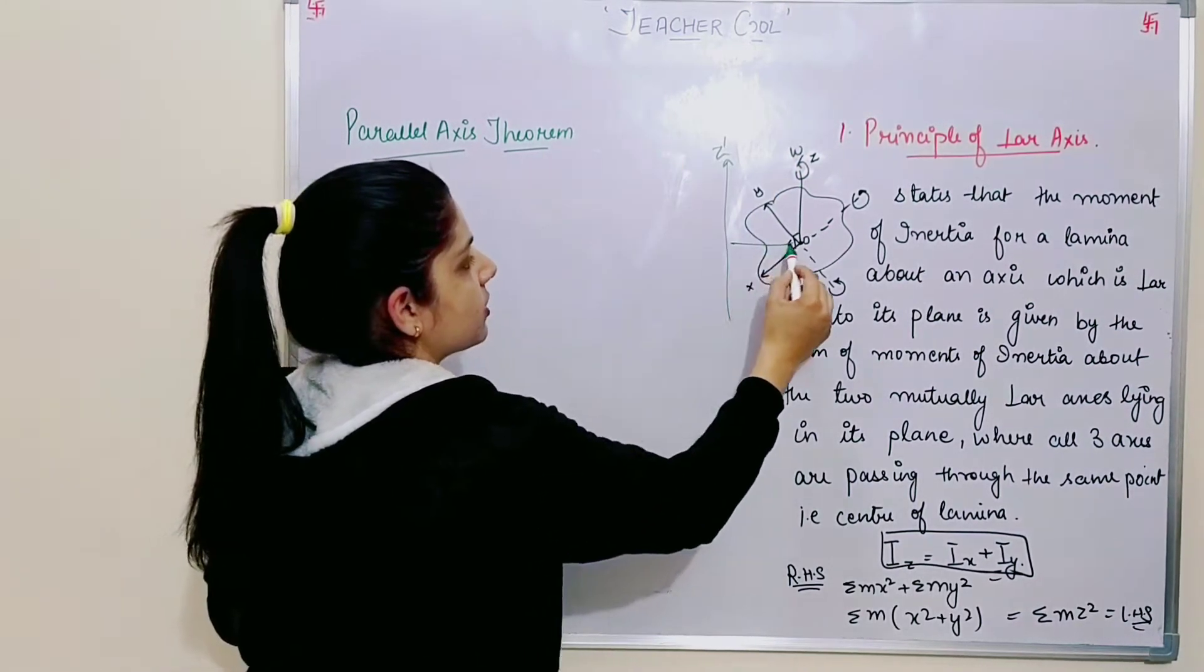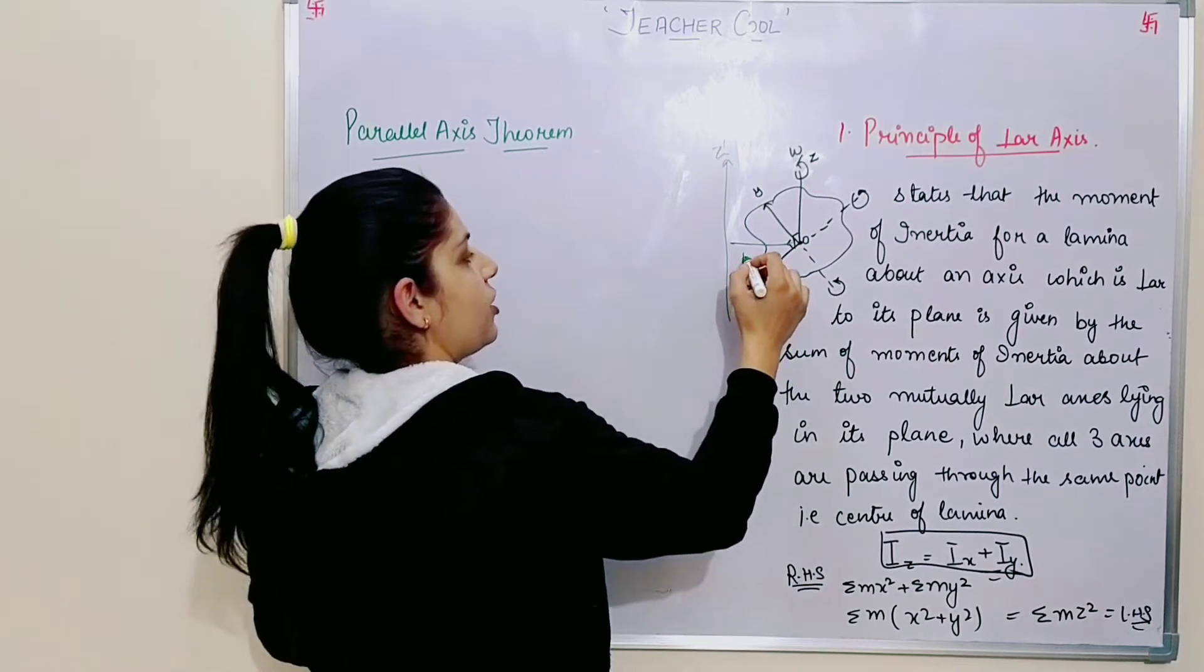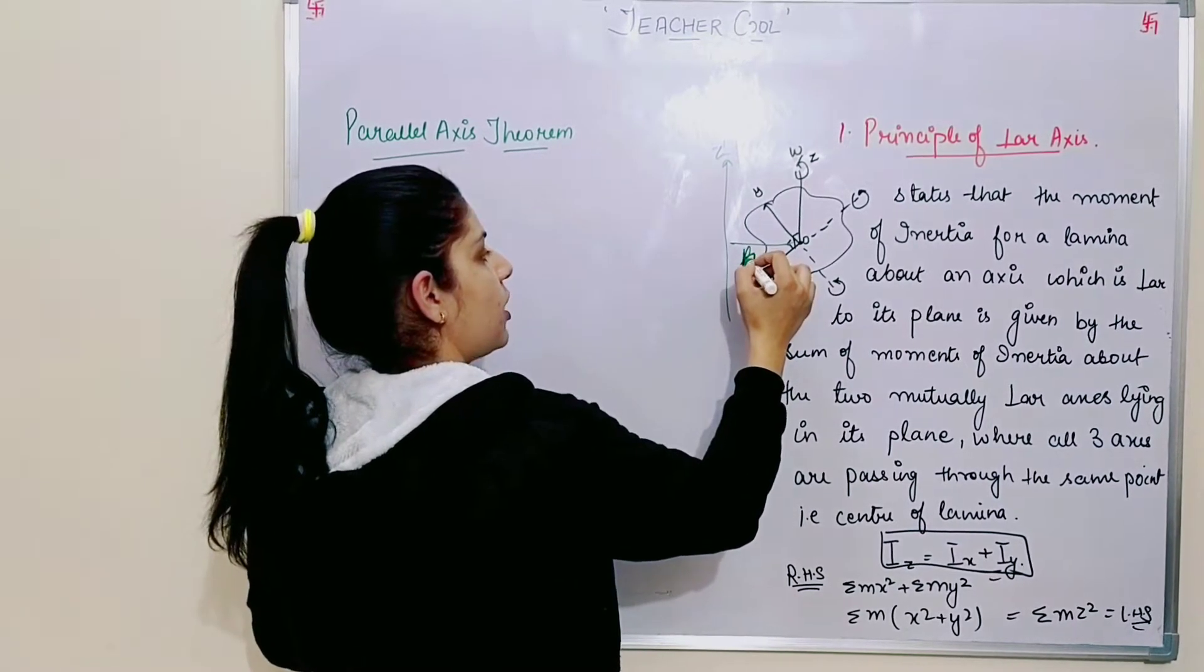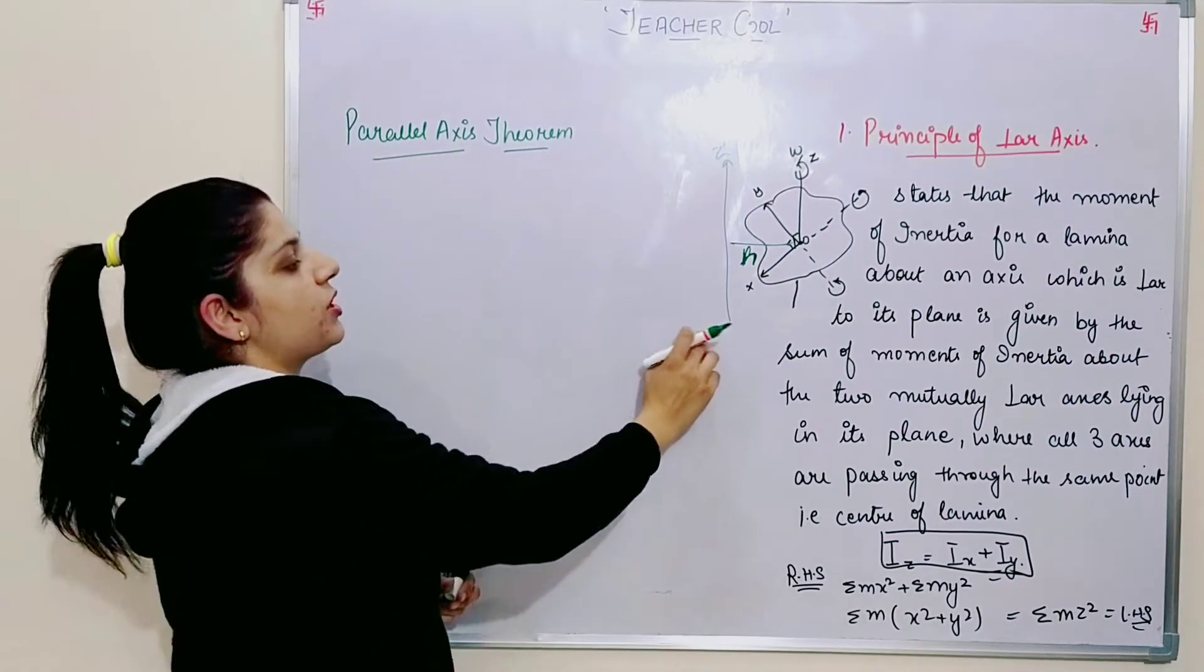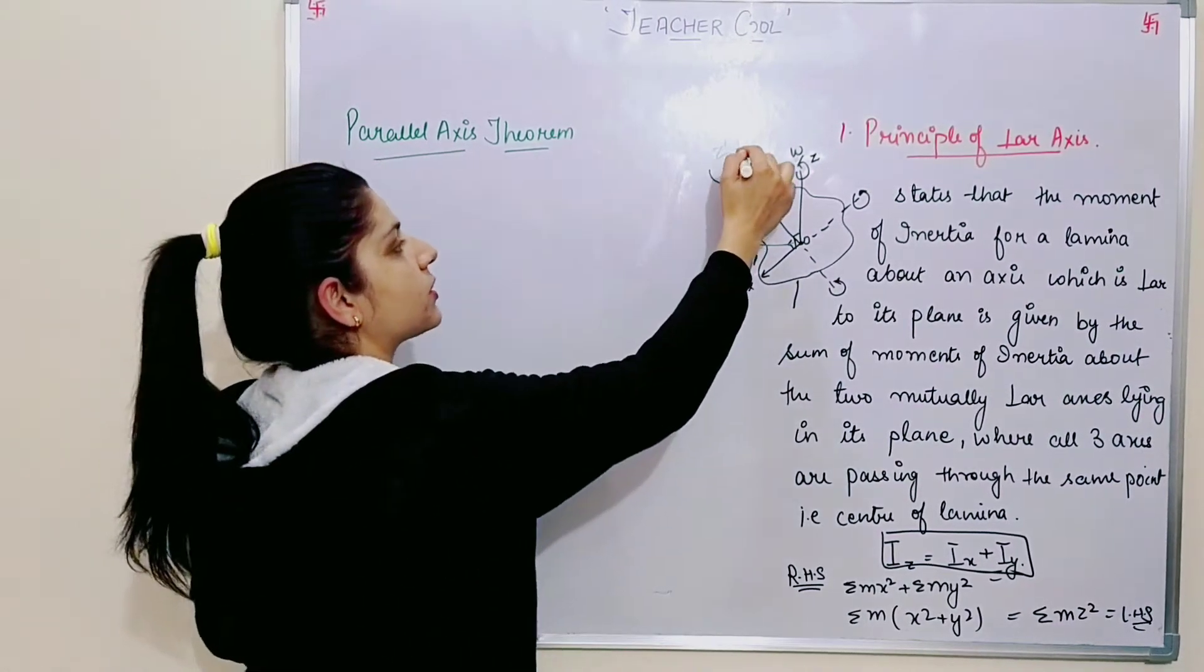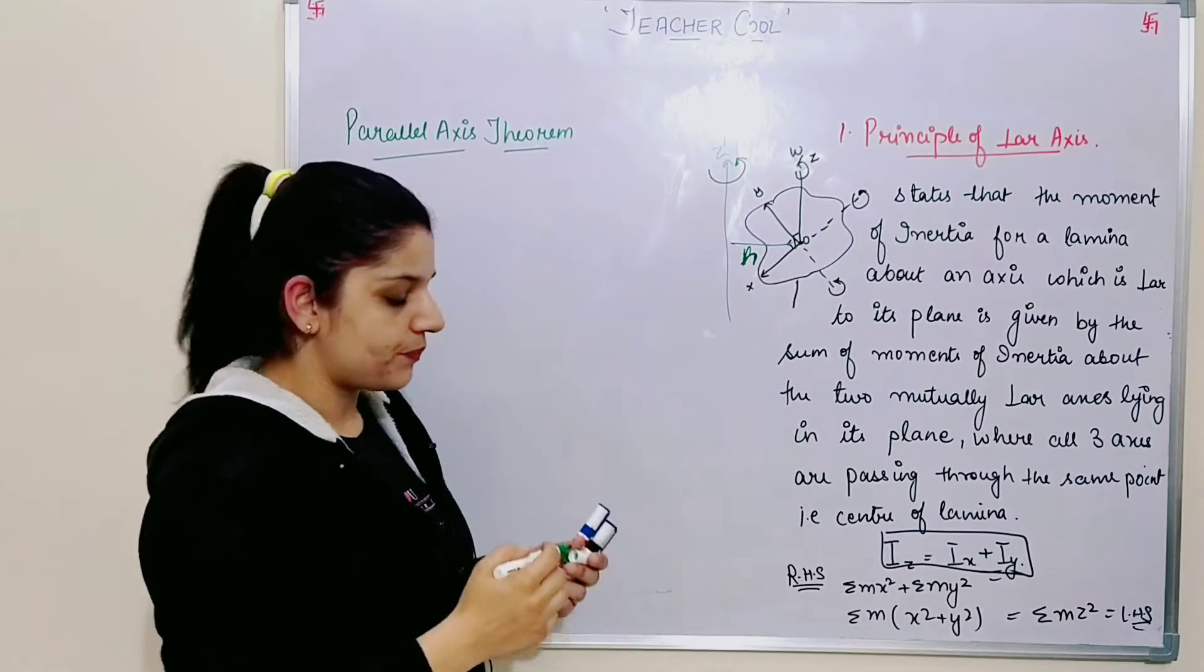So, this distance is h, small h. Now I have to find along this axis, its moment of inertia.